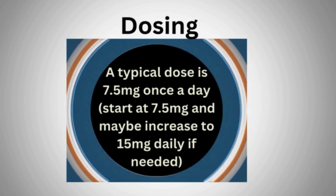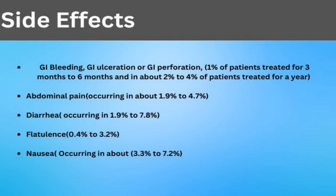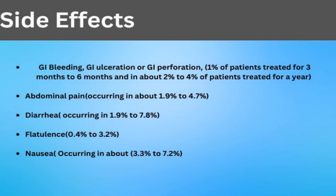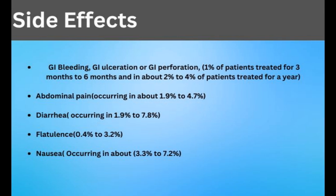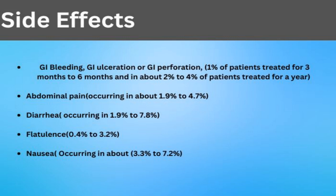Meloxicam has some side effects that primarily center around gastrointestinal issues. There have been reports of gastrointestinal bleeding, ulceration, and perforation. The longer you use this medication, the greater the risk of such GI side effects — and this is not unique to meloxicam, it is a side effect of all NSAIDs.